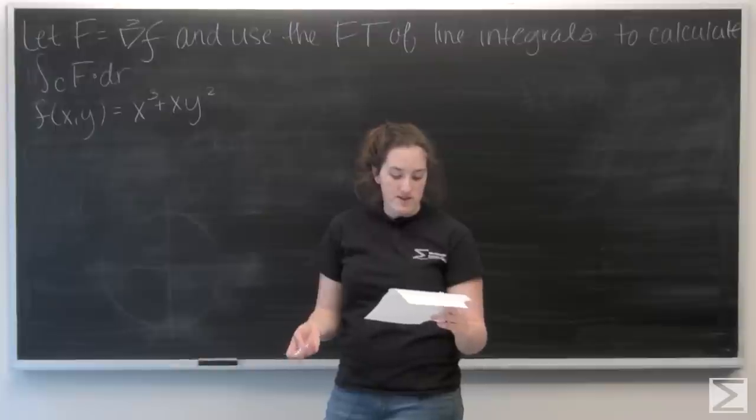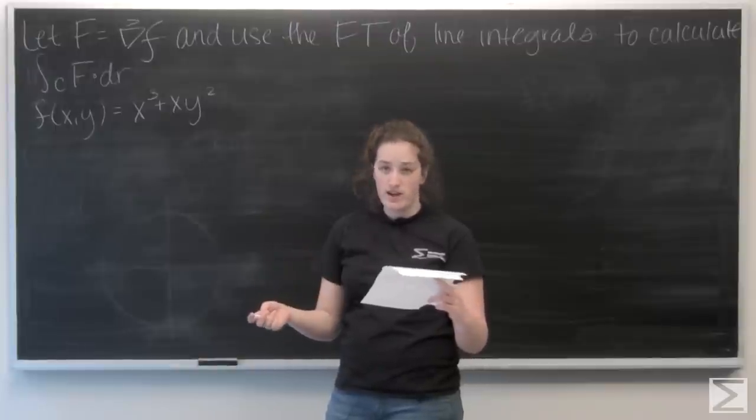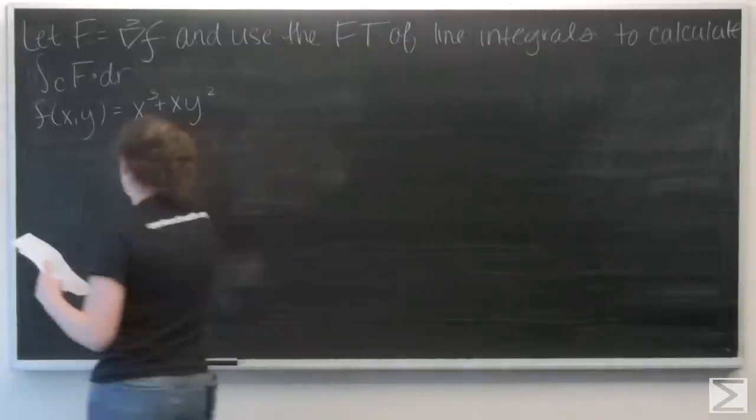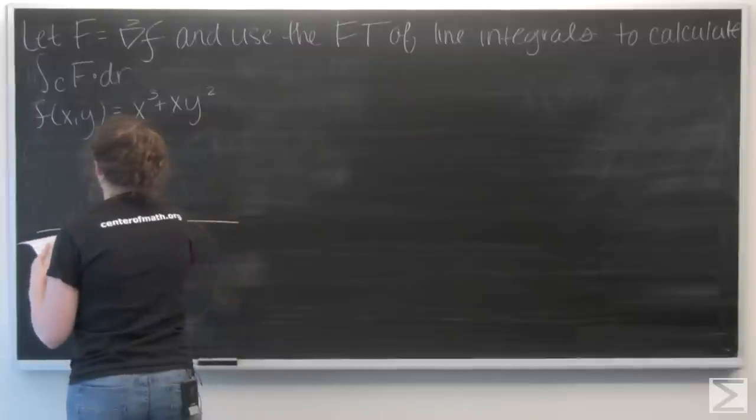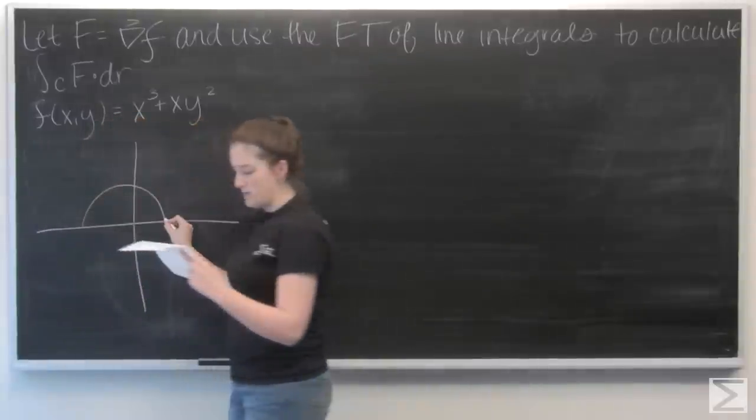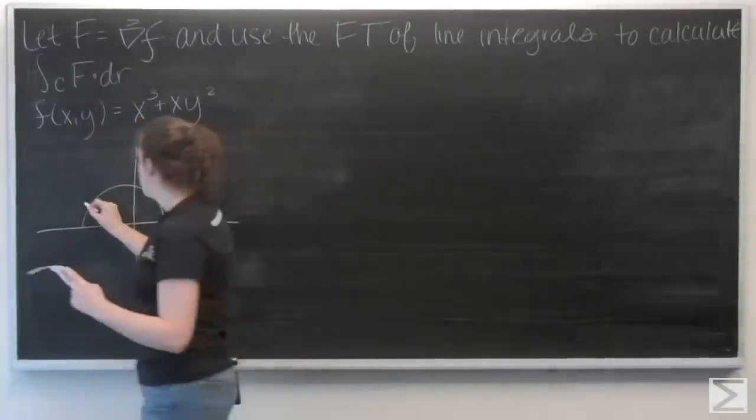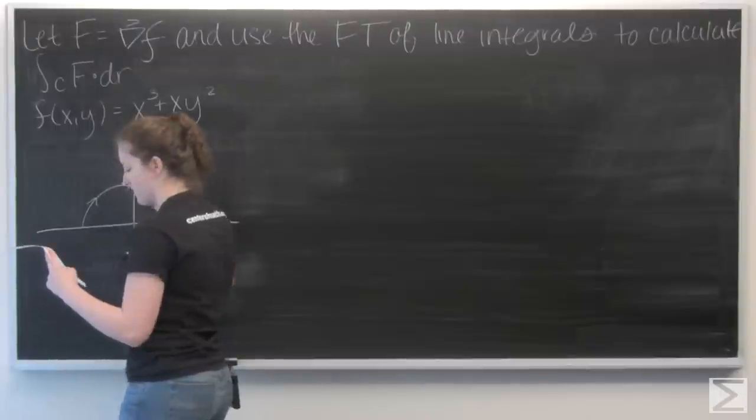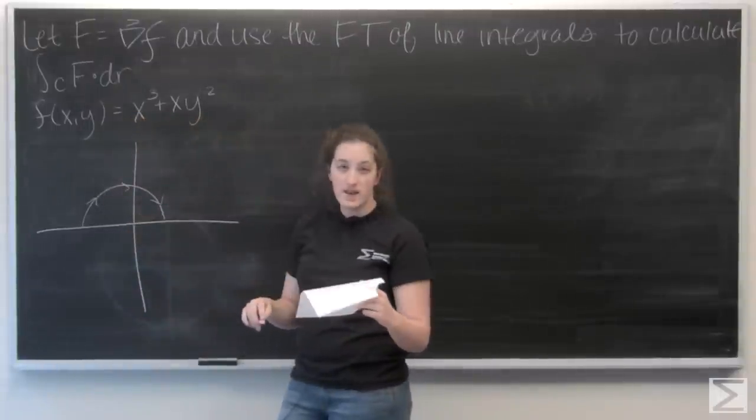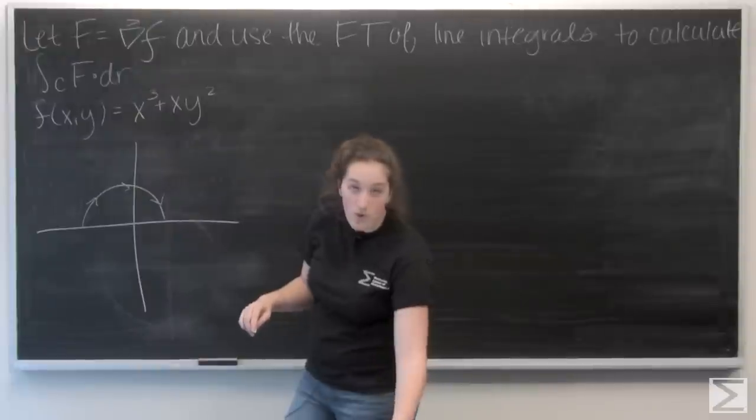And here my curve consists of the top half of a circle of radius 1, centered at the origin, oriented clockwise, followed by a line segment from 1, 0 to 1, 1.